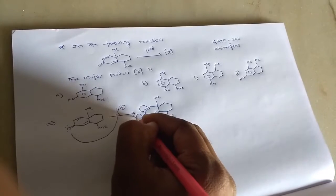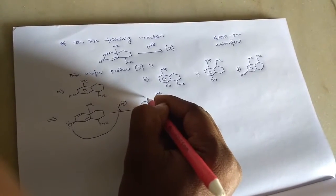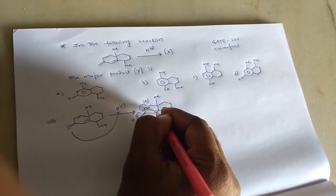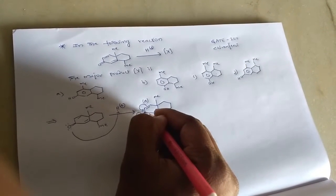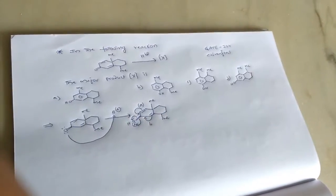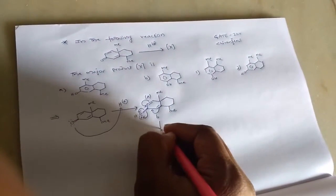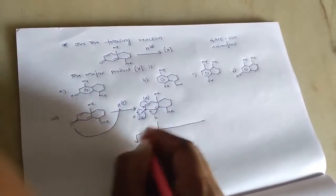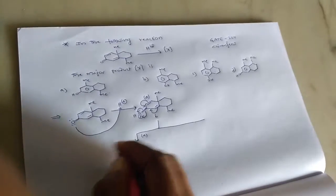And if the double bond from here transfers towards the oxygen, consider this is B. So we have two possibilities. Then if you consider path A, so what happens?